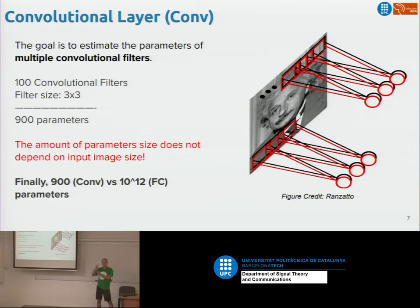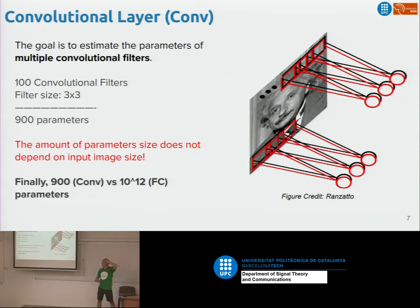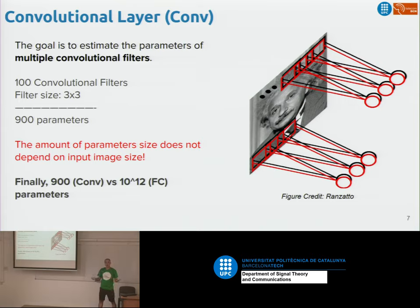Earlier we had a fully connected layer — neurons connected to all pixels, a super high number of parameters. Now instead we have one or two convolutional filters — in this case a red one and a black one — and we scan them over the image. Because we reuse the parameters of each convolutional filter at multiple locations, the number of parameters we need to learn is much, much lower.